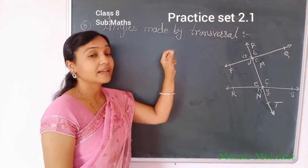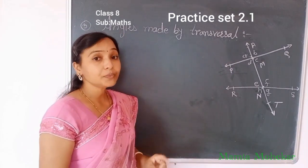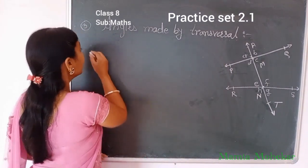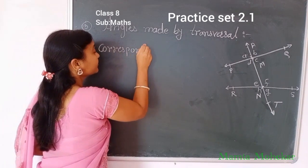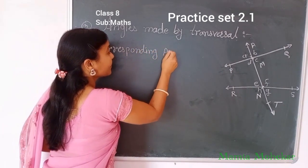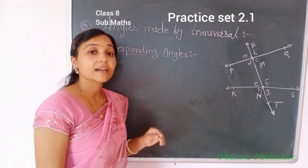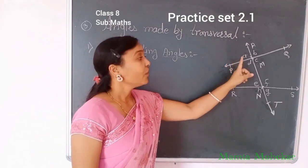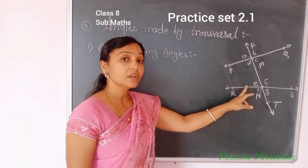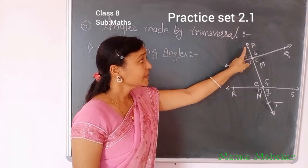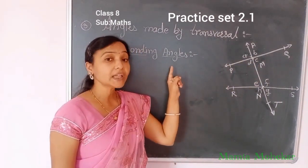Now, angles made by a transversal. These eight angles formed by the transversal are grouped into different types. Our first type is corresponding angles. Corresponding angles are the angles which are lying on the same side of the transversal and also in the same direction of the arms of the transversal — same side and same direction.